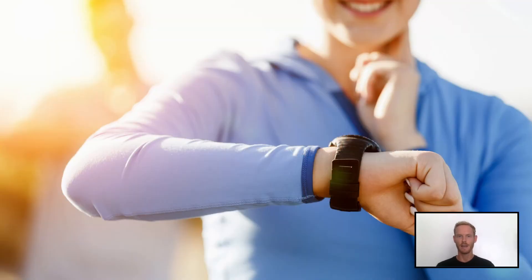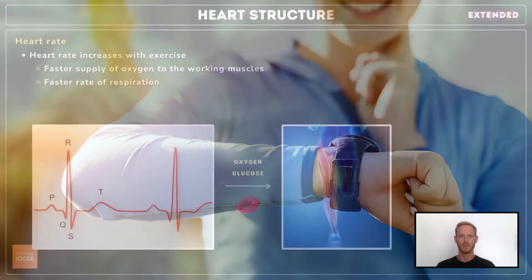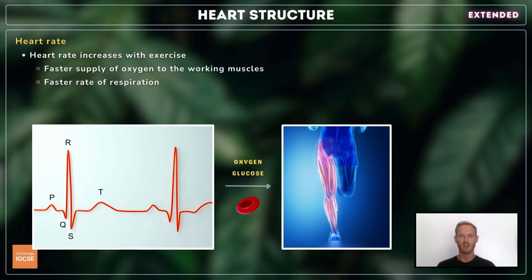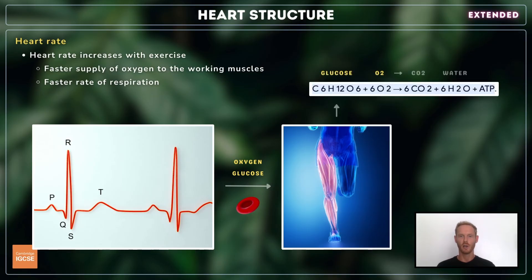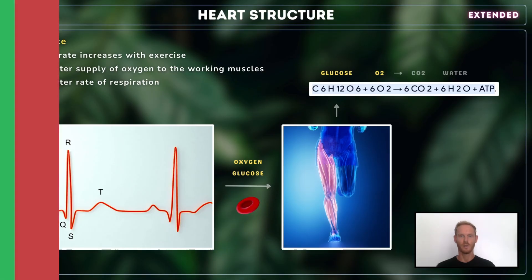Finally, you need to explain the effect of physical activity on heart rate. When you exercise, heart rate goes up to meet the increased demand for oxygen and glucose in the muscle cells. Oxygen and glucose are used to produce energy through aerobic respiration, so by speeding up their supply, the additional energy needed by the muscles can be produced.